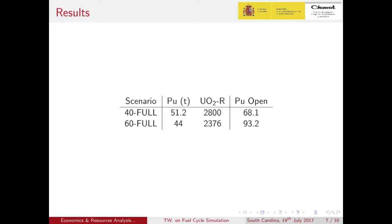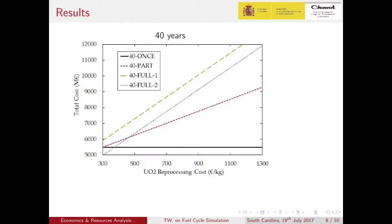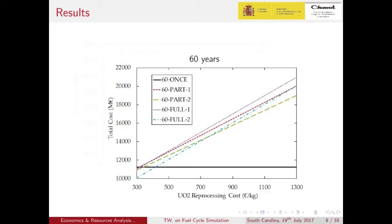A reduction of three-fold in the plutonium mass is achieved in the 40-year scenario, while half of the plutonium is consumed in the extended lifetime scenario. The graphic shows for each scenario the final cost as a function of the reprocessing cost — for 40-year and 60-year scenarios respectively — with the baseline corresponding to the open cycle. Selling the separated materials produces a saving of around 1,000 million euros. Between partial and full reprocessing strategies the costs are the same except for the extra material that must be separated, so when reprocessing is expensive, large differences are found. For the 60-year lifetime case, a difference can also be found between part 1 (UOX reprocessing) and part 2 (MOX reprocessing), because less mass is required in the second case to obtain the same plutonium amount.